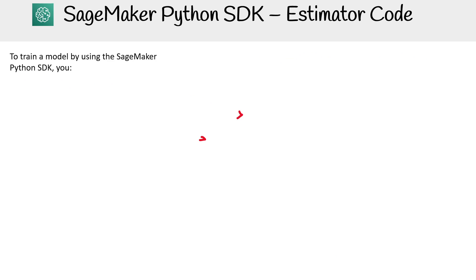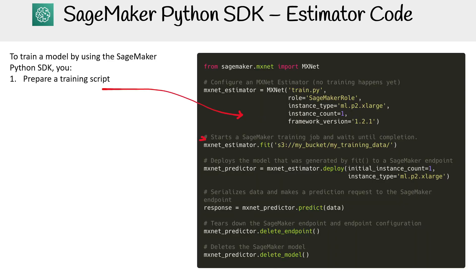To train a model using the SageMaker Python SDK, you prepare your training script. We have MXNet here — it was something often promoted by AWS, though these days a lot of people are gravitating toward PyTorch. Here you can see we prepare our training script, create our estimator, and call the fit method on the estimator.